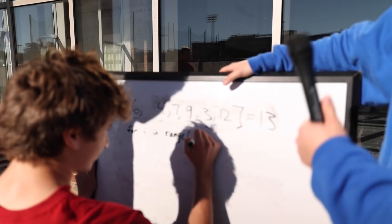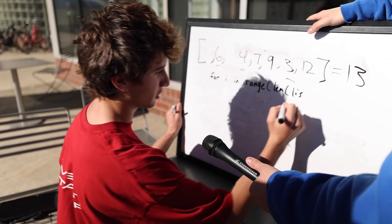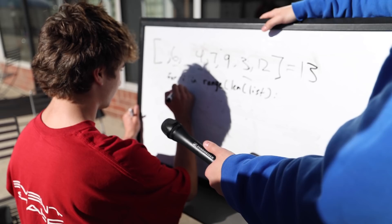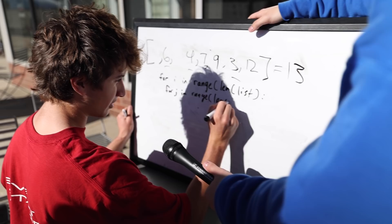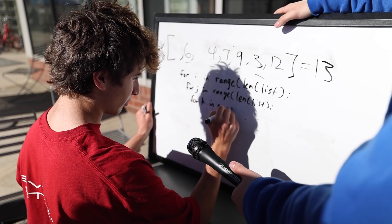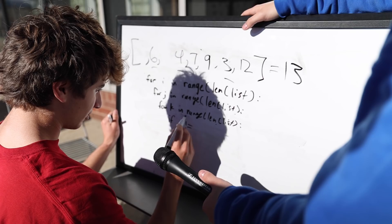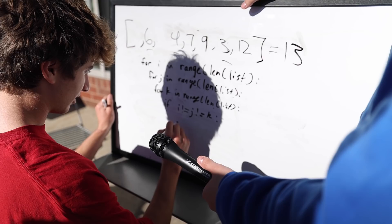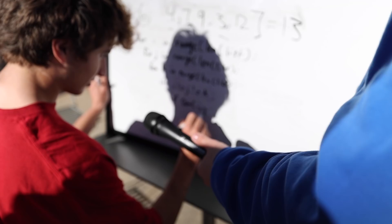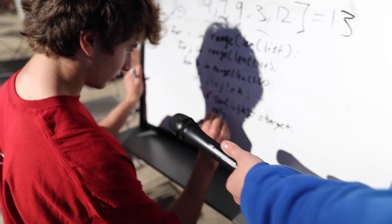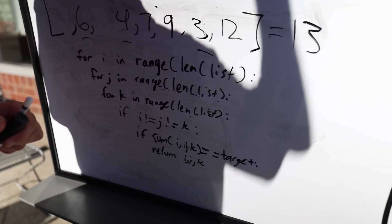Set up one index to get the length of the list — for i in range length of list. Then do a triple nested for-loop because we need three indices: for j in range length of list, for k in range length of list. Satisfy the condition that i, j, and k are not the same. If the sum of list[i], list[j], list[k] equals the target, return i, j, k.